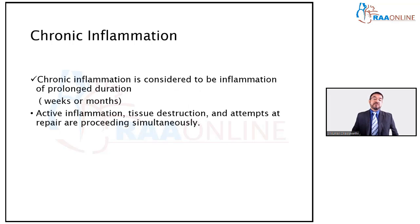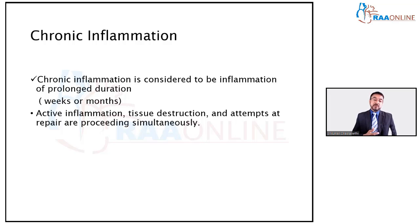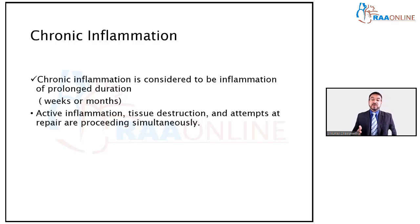Moving on to the definition of chronic inflammation — very simply, it is inflammation of prolonged duration. In acute inflammation, the process takes minutes to hours or even days. But in chronic inflammation, it can take weeks, months, or even years. Examples include rheumatoid arthritis and systemic lupus erythematosus, which are inflammations a person bears throughout their life, requiring chronic anti-inflammatory drugs — NSAIDs — for a prolonged period.